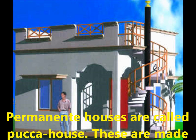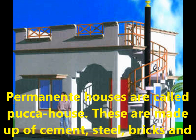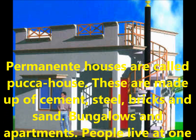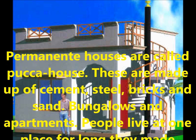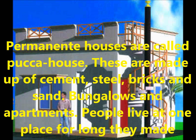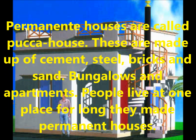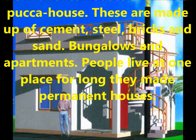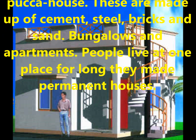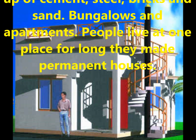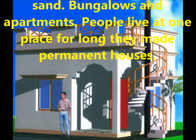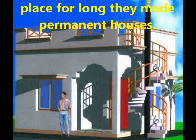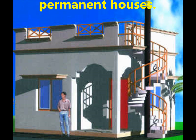Permanent houses are also called Kaccha houses. They are made up of steel, cement, bricks and sand. Bungalows and apartments are the examples of permanent houses. People who live at one place for a long time make these permanent houses.